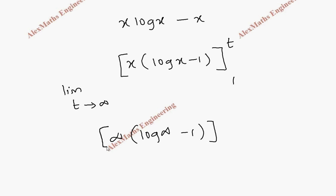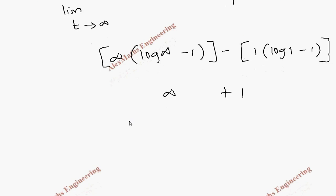Upper limit. Then minus lower limit 1 times log 1 minus 1. Log 1 is 0. So it is totally minus 1 and already there is a minus so we get plus 1. But here we get infinity. So we are not getting a finite answer. Therefore it is divergent.